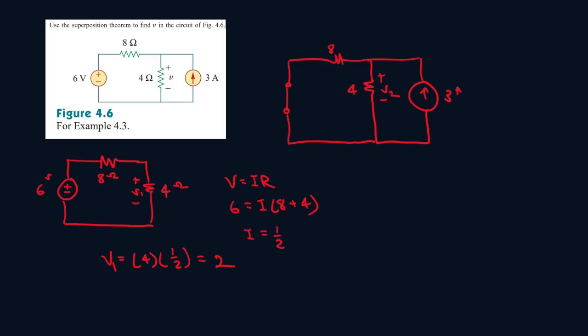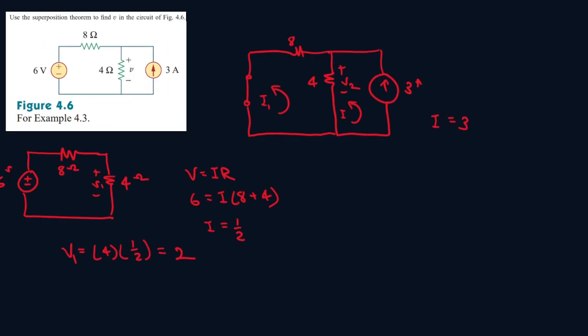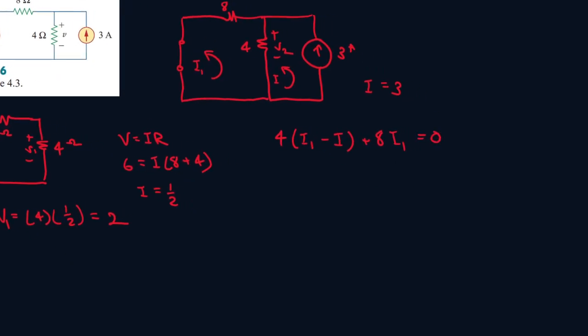Now this will be V2. So now you have to solve for this one. Let's start by doing a mesh. Let's call this I1. Actually, let me do the other direction. Let's call this I and let's call this I1. We already know what I will be. I will be 3 because it's moving in the same direction as this. So now we have 4 I1 minus I plus 8 I1 equals 0. This will be 4 I1 minus 3 plus 8 I1.